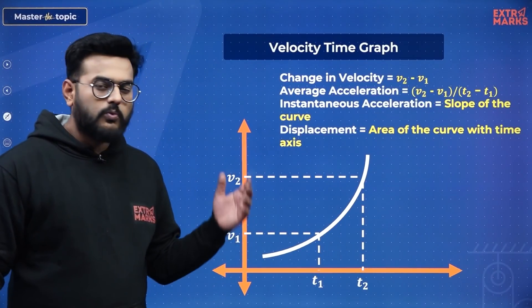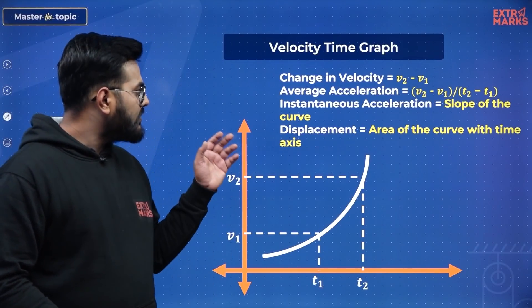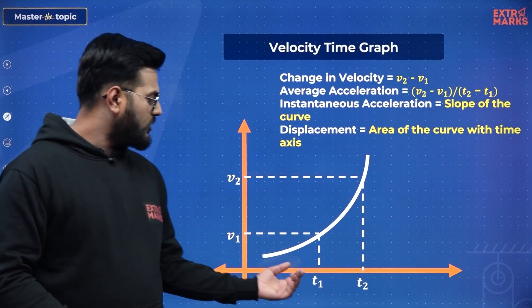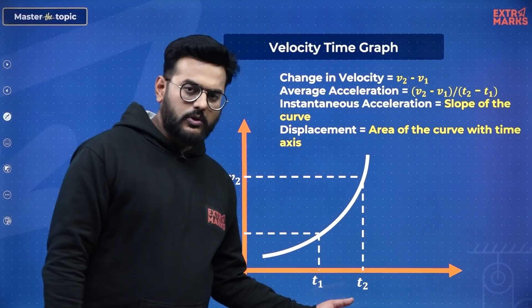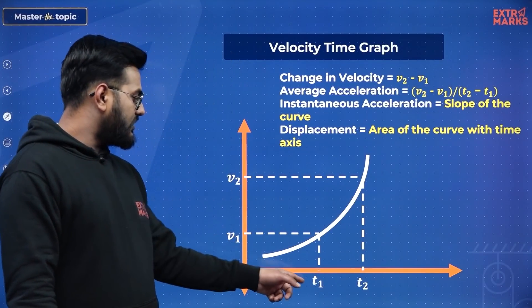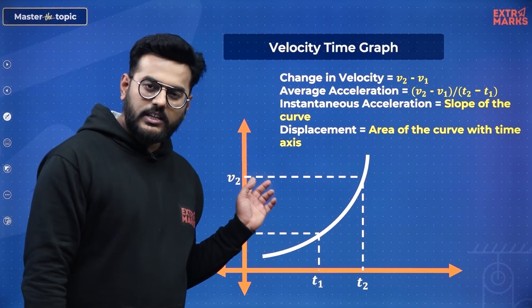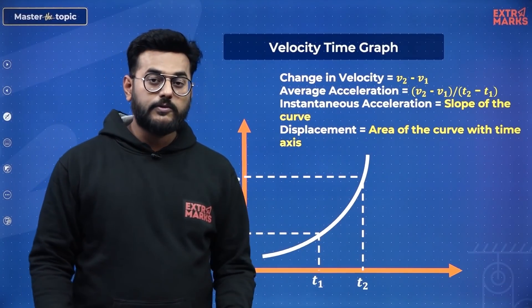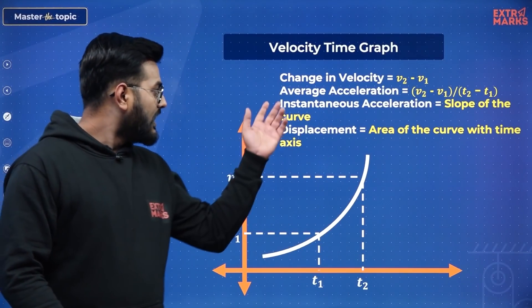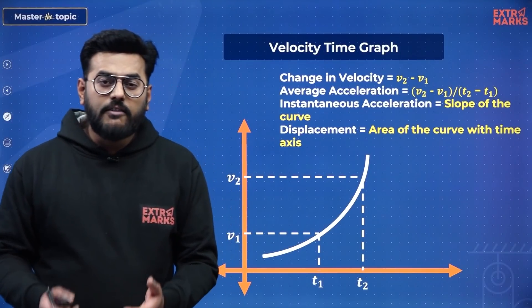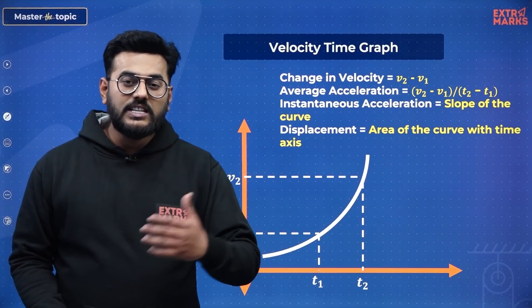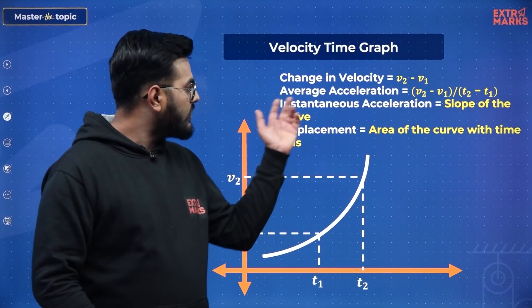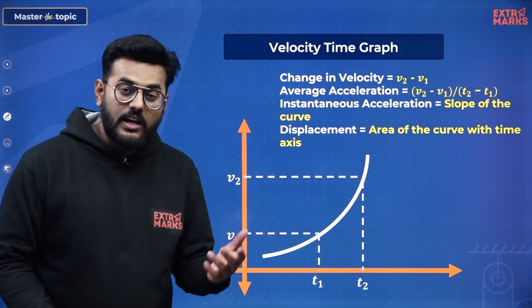Now, from a velocity-time graph: similarly, I can find the change in velocity. If I want the change from T1 to T2, at T1 I had velocity V1 and at T2 velocity V2 — V2 minus V1 gives the change in velocity. Another thing: I can find average acceleration by dividing the change in velocity by the change in time.